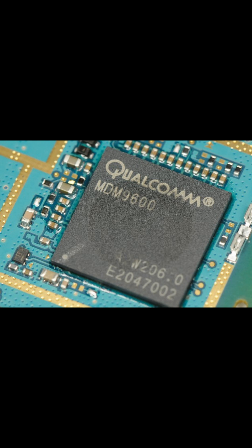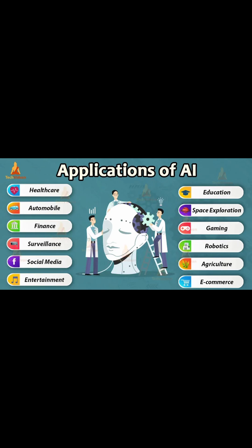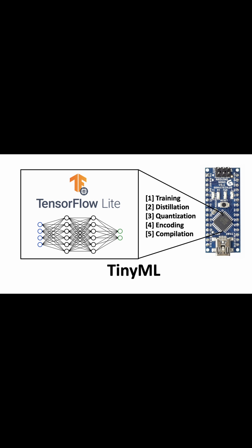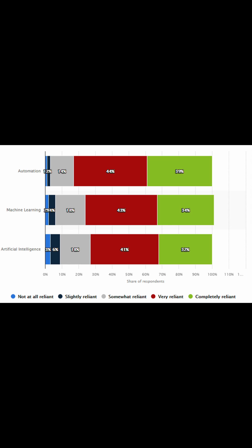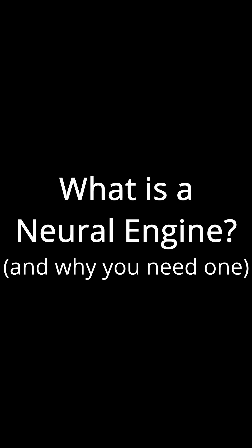Now imagine doing this on a mobile CPU, which has 32 times less threads available and also running multiple models at the same time for the countless number of machine learning applications on cell phones. Now of course mobile phone machine learning models probably aren't that large and computationally intensive, but it just shows how much of a difference application specific hardware can make in terms of compute time. With everything becoming more and more reliant on machine learning these days, you'll need a machine learning specific processor to take full advantage of these AI features.